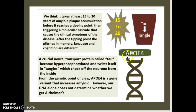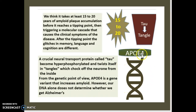From a genetic standpoint, there is a gene called APOE4. This gene is a variant that actually increases amyloid. When a person has Alzheimer's, there is a very large amount of this gene present, and it generally triggers Alzheimer's. However, there are some exceptions where this gene does not trigger Alzheimer's.